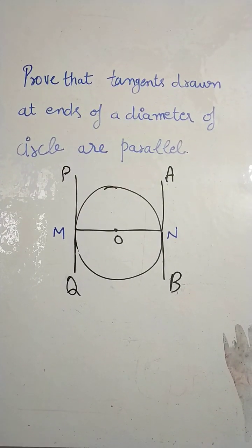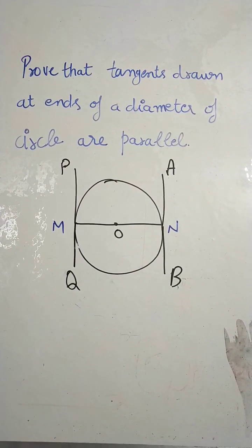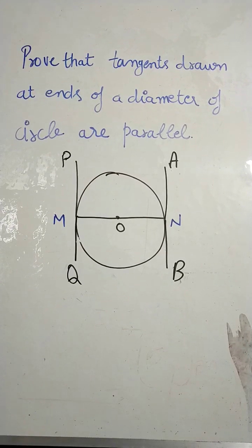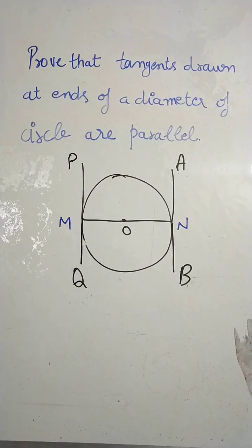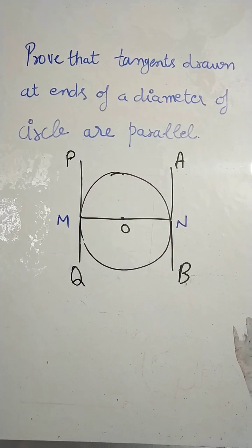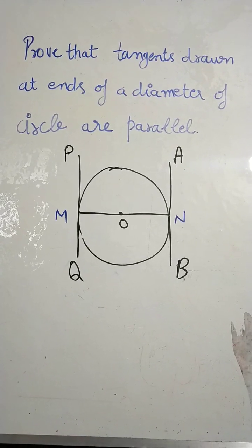Hello students. The question is: prove that tangents drawn at ends of a diameter of a circle are parallel. The diameter is MN and the tangents are PQ and AB. We have to prove PQ is parallel to AB.